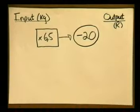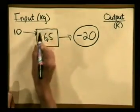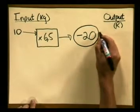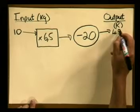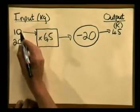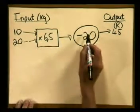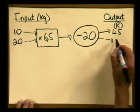Any input value is subject to two operations: we first multiply it by 6,5, then subtract 20 to get the final output value. Choosing easy input values — for an input of 10, multiply by 6,5 to get 65, subtract 20, giving a final output of 45. For an input of 20, which is 2 times 10, double 65 to get 130, subtract 20, giving a final output of 110. For an input of 1, 1 times 6,5 is 6,5, subtract 20, giving a final output of minus 13,5.